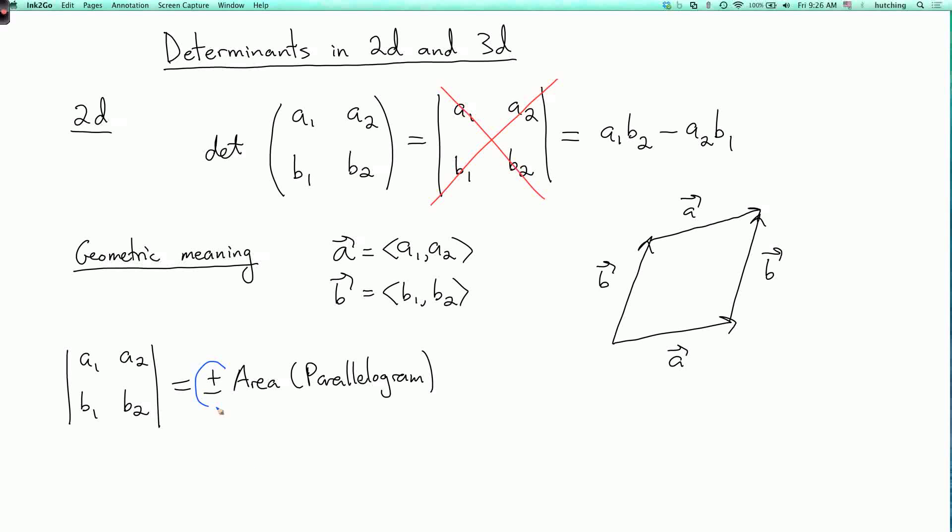And what's the deal with the sign here? So it's plus when a points to the right of b. In other words, if you put the tails of the two vectors at the same point, then if you stand on that point and sort of look forward, you see a to your right and b to your left. This is not a very rigorous way of saying it, but I think you get the idea. And it's minus when a points to the left of b. You can check this by just drawing the parallelogram and calculating its area.